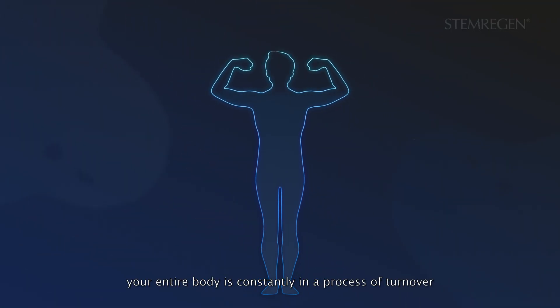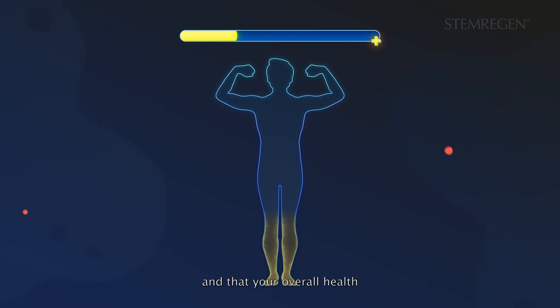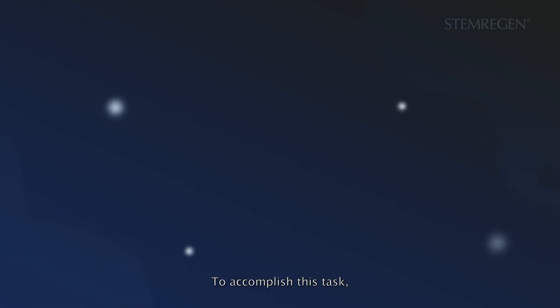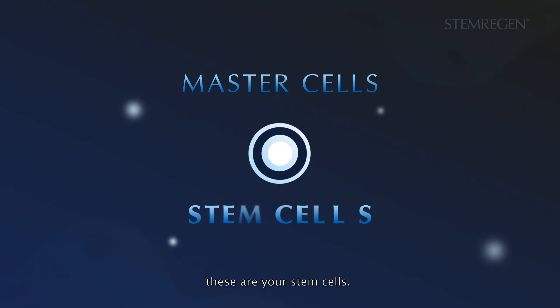The bottom line is that your entire body is constantly in the process of turnover and that your overall health depends upon your body's ability to renew itself. To accomplish this task, your body has master cells that are able to replace the cells that are being lost. These are your stem cells.